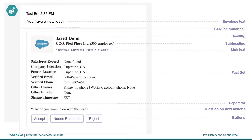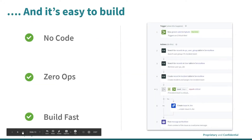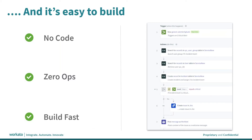Building something like this typically requires developers — the APIs are available for Teams and for other SaaS applications. But with Workbot, it's easy to build without writing any code, and deployment is all in the cloud, so there's no operational overhead. We can really build this fast.